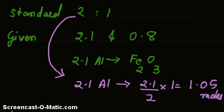However, we got only 0.8, so this is less. Therefore, the quantity of aluminum of 2.1 mole is in excess. Fe2O3 is fully consumed and part of aluminum remains. Therefore, the one which is fully consumed is called the limiting reagent. So limiting reactant or reagent is Fe2O3.